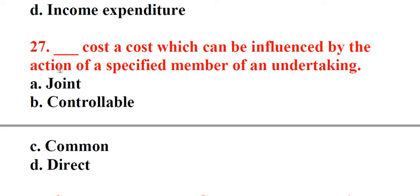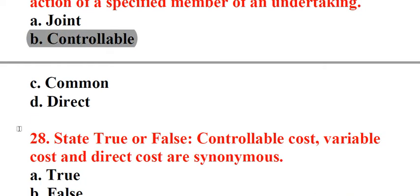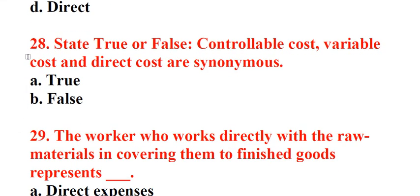Question 27: Underscore cost, a cost which can be influenced by the action of a specified member of an undertaking. A. Joint, B. Controllable, C. Common, D. Direct. Answer: B. Controllable. Question 28: State true or false. Controllable cost, variable cost and direct cost are synonymous. A. True, B. False. Answer: B. False.